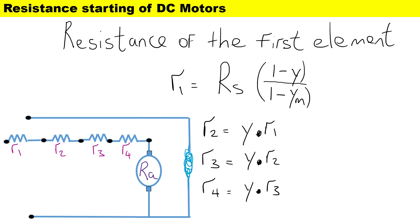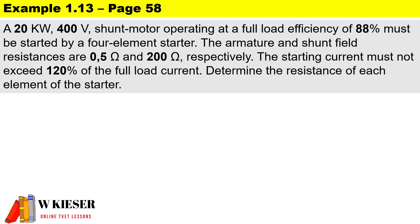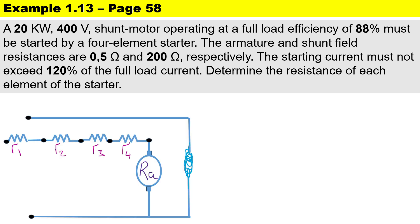In Example 1.13 on page 58 of our textbook: a 20 kilowatt, 400 volt shunt motor operating at full load efficiency of 88% must be started by a four-element starter. The armature and shunt field resistances are 0.5 ohms and 200 ohms respectively. The starting current must not exceed 120% of the full load current. We need to determine the resistance of each element of the starter, shown here with four elements and five studs to limit current at start.